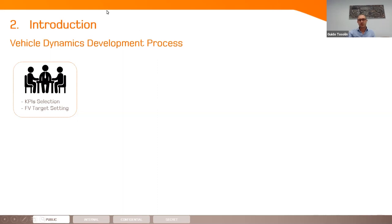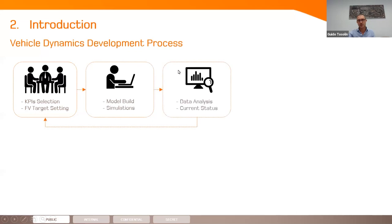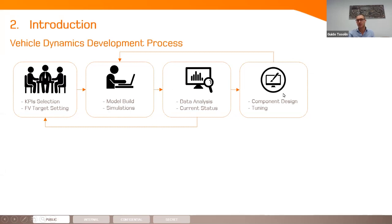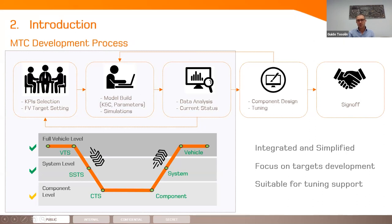The vehicle dynamics development process normally is composed of KPI selection, running simulations, data analysis, and then — after this loop runs for some time — design of components, tuning, and verification of performance. The MTC is a tool supposed to work on the three initial stages: it doesn't go into the details of supporting component design, but supports target setting, simulation, definition of KNC targets, and data analysis at a high level — focusing on full vehicle and system levels.